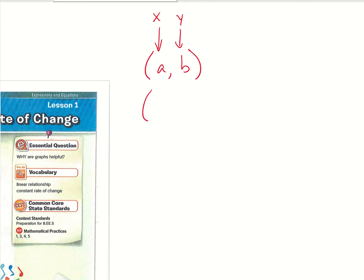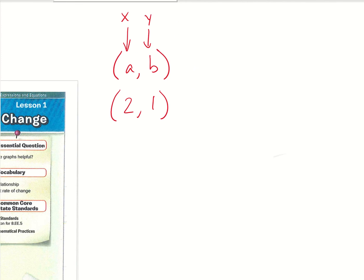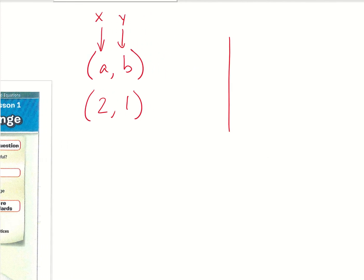An example of this would be (2, 1). When we graph that, we're going to go the X first and then the Y second.